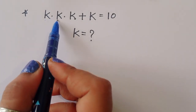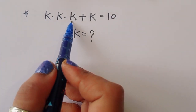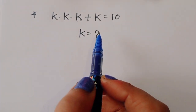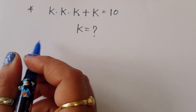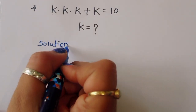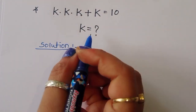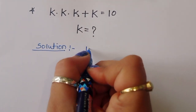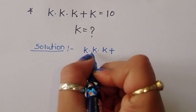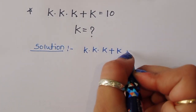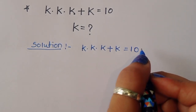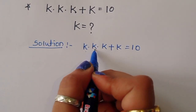The problem is: k times k times k plus k is equal to 10. We have to find out the value of k. Let's see the solution. k times k times k, 3 times k, plus k is equal to 10.